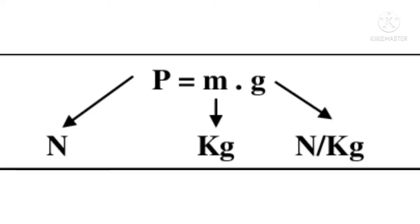M هي كتلة الجسم بالكيلوغرام، وP هي شدة وزن الجسم بالنيوتون، يُرمز لها بـ N. هذه العلاقة P = M × G يجب أن تكون محفوظة. إذا أُعطيت قيمتان وطُلب منك إيجاد الثالثة: M = P ÷ G، أو P = M × G. انطلق دائمًا من المطلوب واستعمل المعطيات المتوفرة.